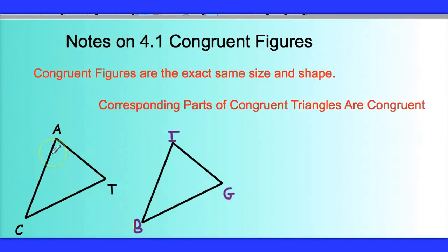For example, segment CA corresponds to segment BI. Those would be corresponding parts. And angle C would be congruent to angle B, because those are corresponding parts as well.